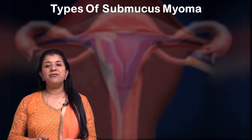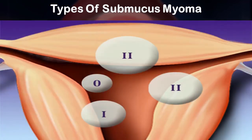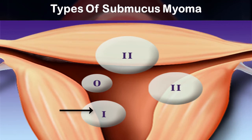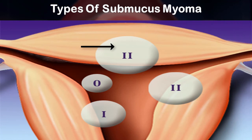What are the different types of submucous myomas? Grade 0 is completely inside the uterine cavity. Grade 1 is where one third of it extends into the myometrium. Grade 2 is where more than half is in the myometrium with only a small portion inside the uterine cavity — these can be shaved up to the basal level of the myometrium.